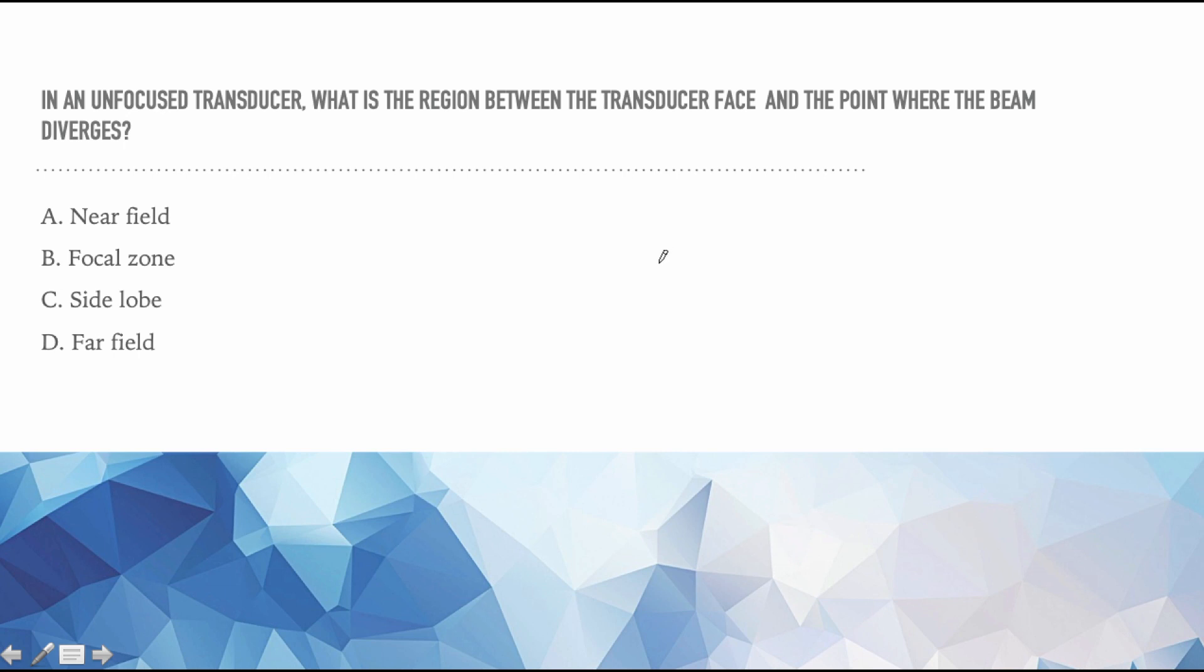In an unfocused transducer what is the region between the transducer face and the point where the beam diverges? So what's important in this question? Well unfocused - that's an important word. And then we're looking for the region between the face and the point where it diverges. So basically the point where it diverges and the face, what's that place called? So if we have our transducer and the beam looks like this and then it diverges, this is our focal point. Is that different than something that looks like this? This one here is a focused transducer because it's kind of focusing down. The focal point is actually smaller than the face of the transducer. Technically it's going to be the crystal. This would be an individual crystal. On this one it's kind of straight on down to the focal point and then it diverges. So this would be an unfocused.